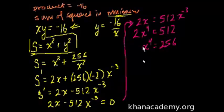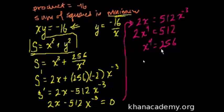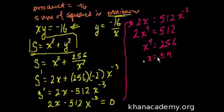x is the fourth root of 256. The square root of 256 is 16, and the square root of 16 is plus or minus 4. So x equals plus or minus 4. You can verify this by taking either minus 4 or positive 4 to the fourth power — you will get 256.